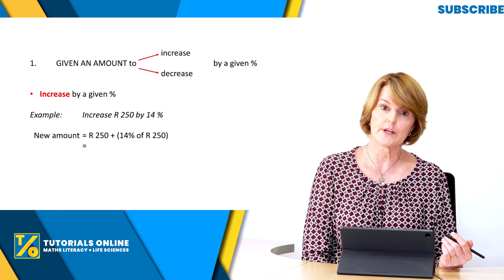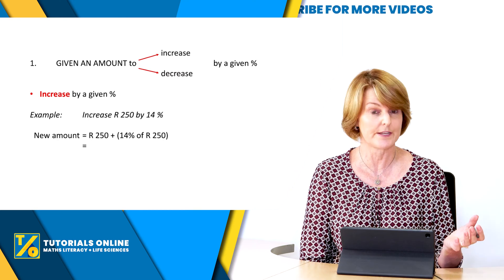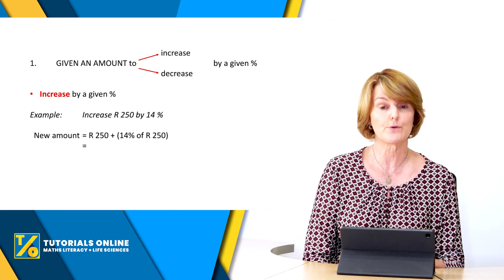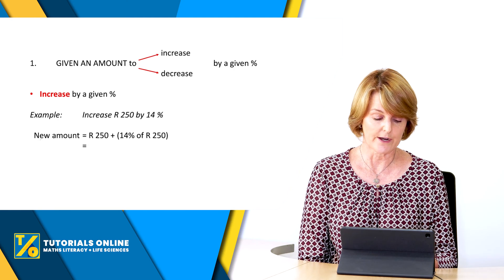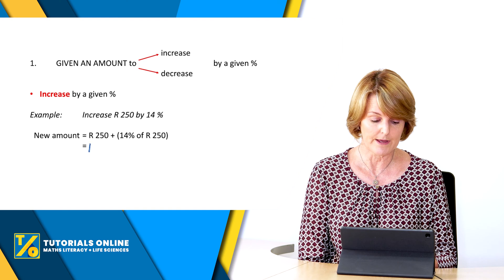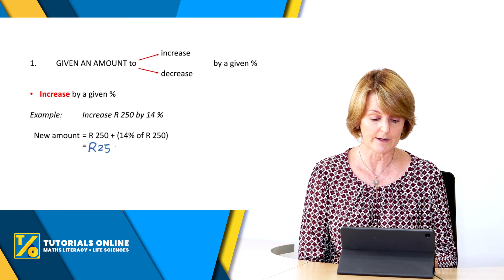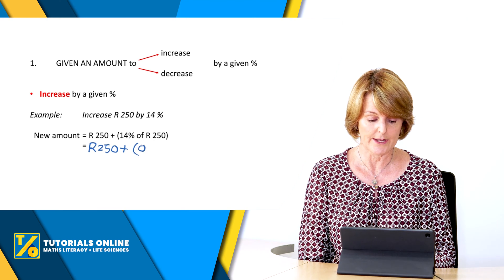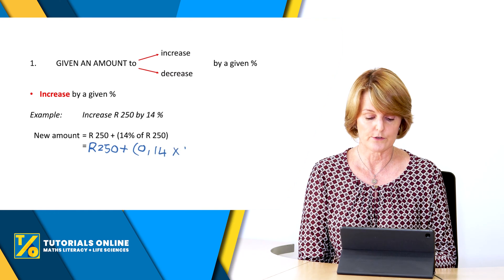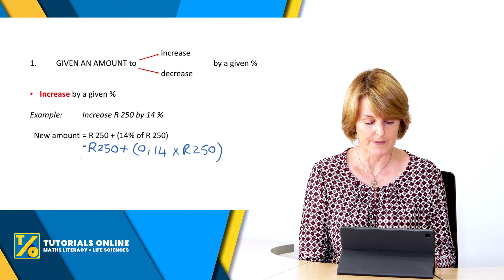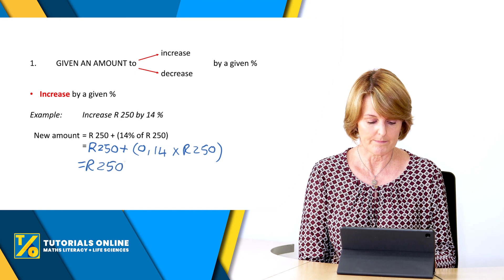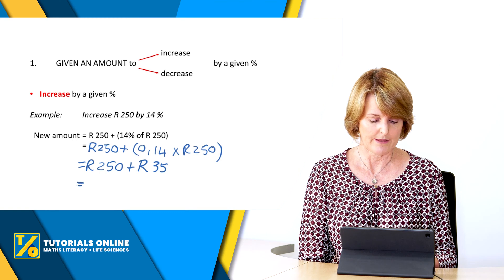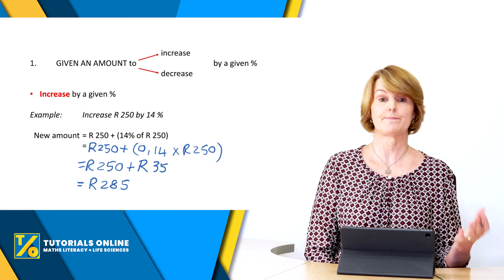Now let's look at increasing or decreasing an amount by a certain percentage. Here's an example: increase 250 by 14%. New amount equals 250 plus 14% of 250, which is 250 plus 0,14 times 250. That gives 250 plus 35 rand, which equals 285 rand. With a percentage increase, the answer must always be more than the original 250.